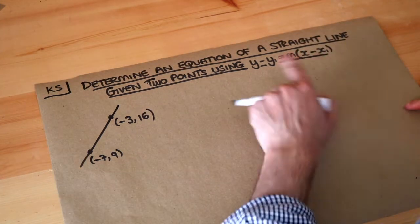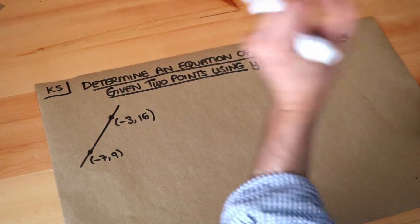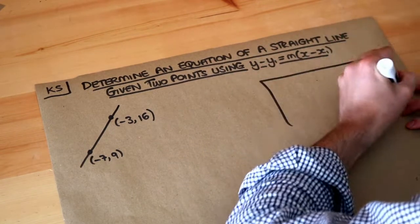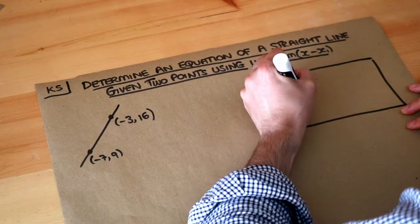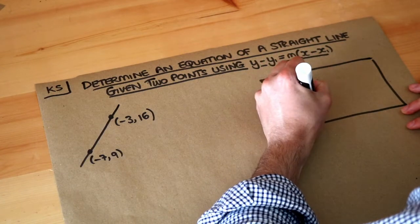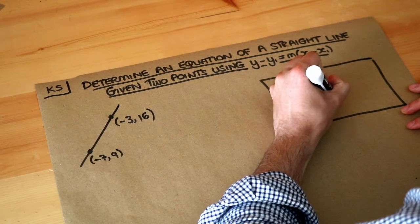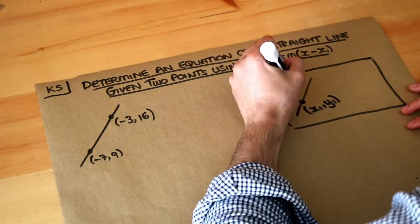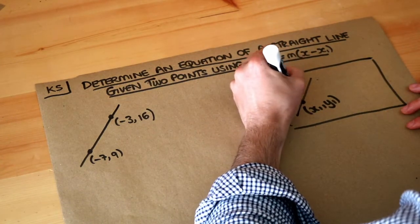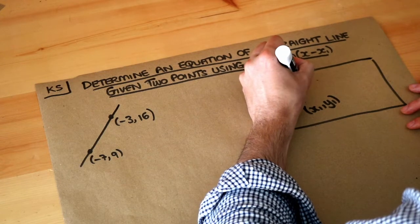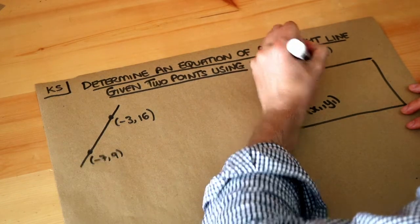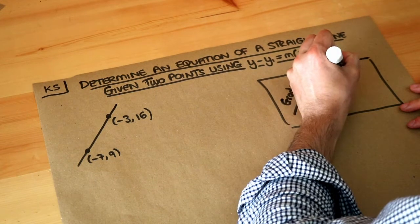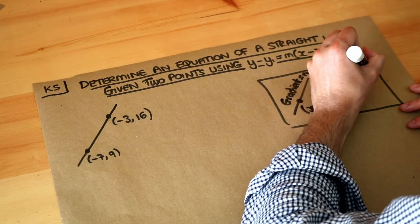In a previous video we saw how this formula could be useful when we knew a fixed point on the line and the gradient. If you have a straight line with some fixed point on the line, let's call it x1 y1, and xy is a generic point on the line, with a known gradient m, then the equation of that line is y minus y1 equals m brackets x minus x1.